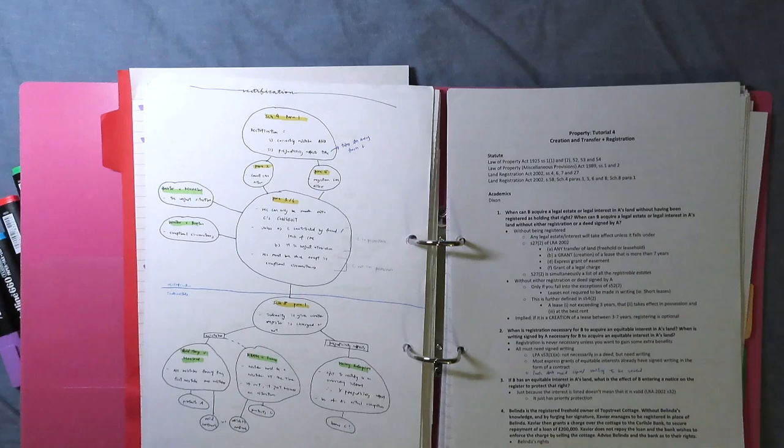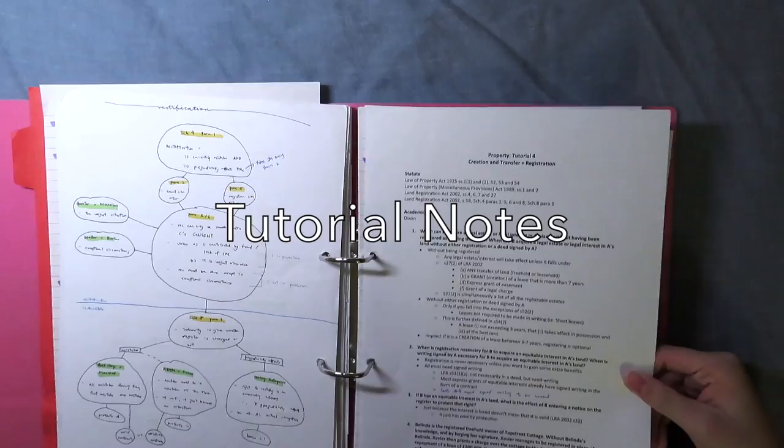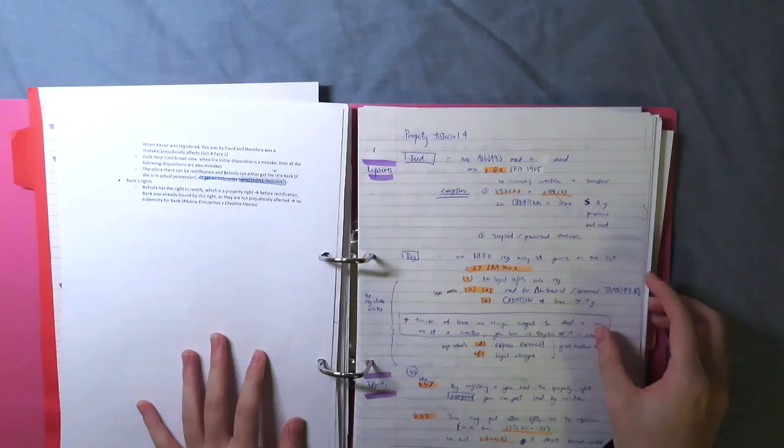And so you can just make these kind of graphs to consolidate your memory and to make sure you can really understand how everything links together. Finally, finally, finally, it's your tutorial notes. And you can't really have a formula for how to write tutorial notes because it really does depend on your tutor. But what I do for some tutors is I will type out my notes because they ramble on a lot during the tutorial, so I need to type out everything they say really quickly.